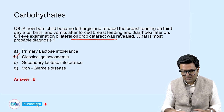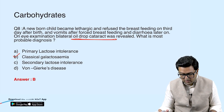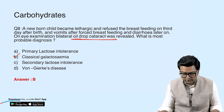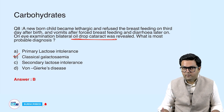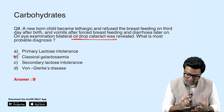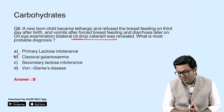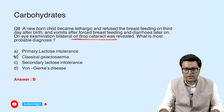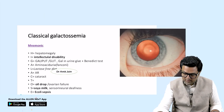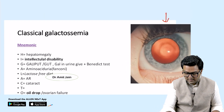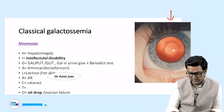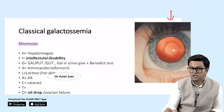The answer is classical galactosemia. Lactose intolerance would have prominent diarrhea; Von Gierke's disease presents with hepatomegaly but not breastfeeding refusal. The mnemonic HIGH helps remember galactosemia features: H — Hepatomegaly, I — Intellectual disability (mental retardation), G — enzyme Galactose-1-phosphate uridyl transferase, H — High galactose.